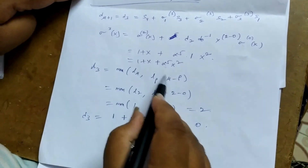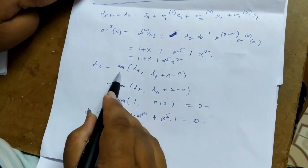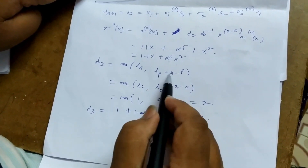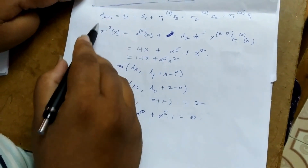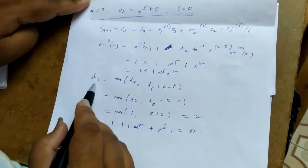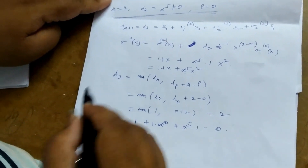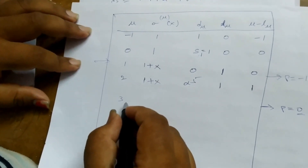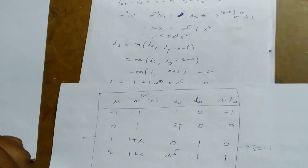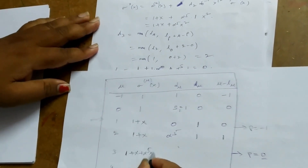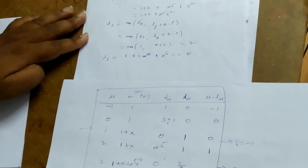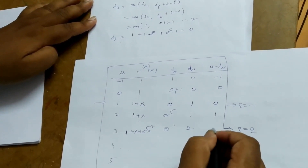Computing σ_3(x) with the substitutions and L3 = max(L_μ, L_ρ + μ - ρ) = max(L2, L0 + 2-0). After the calculations, the updated values for μ=3 are: σ_3(x) = 1 + x + α^5·x², d3=0, L3=2, and μ - L_μ = 3-2 = 1.